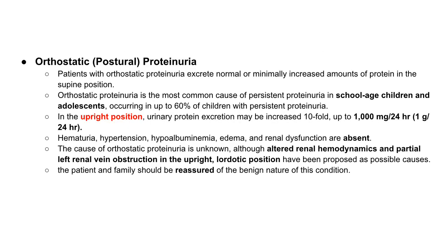Orthostatic proteinuria is the most common cause of persistent proteinuria in school-age children and adolescents, occurring in up to 60% of children with persistent proteinuria. Patients with orthostatic proteinuria excrete normal or minimally increased amounts of protein in the supine position, but in the upright position urinary protein excretion may be increased tenfold, up to 1 gram per 24 hours. Abnormal findings such as hematuria, hypertension, hypoalbuminemia, edema, and renal dysfunction are absent. The exact cause is unknown, though altered renal hemodynamics and partial left renal vein obstruction have been proposed. The patient and family should be reassured of the benign nature of this condition.